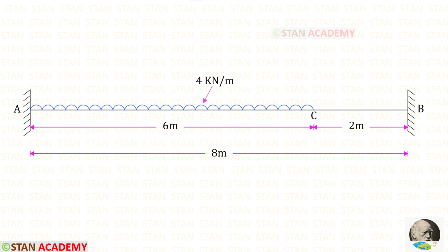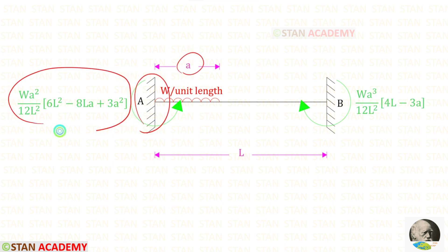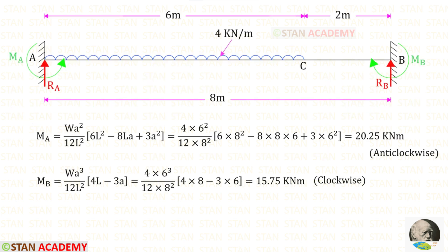Now using formulas let us find the moments at ends A and B. If in the fixed beam a uniformly distributed load is acting for a distance A from the left end, this is the formula to find the moment at the left end and this is the formula to find the moment at the right end. Applying the values — A is 6, W is 4, and L is 8 — for MA we get 20.25 kilo Newton meter and for MB we get 15.75 kilo Newton meter.